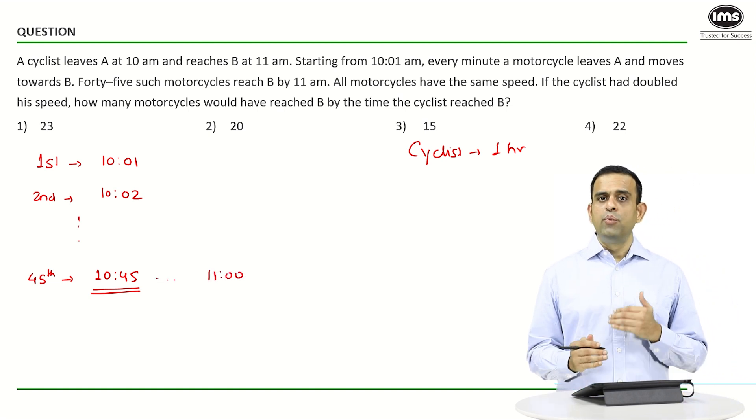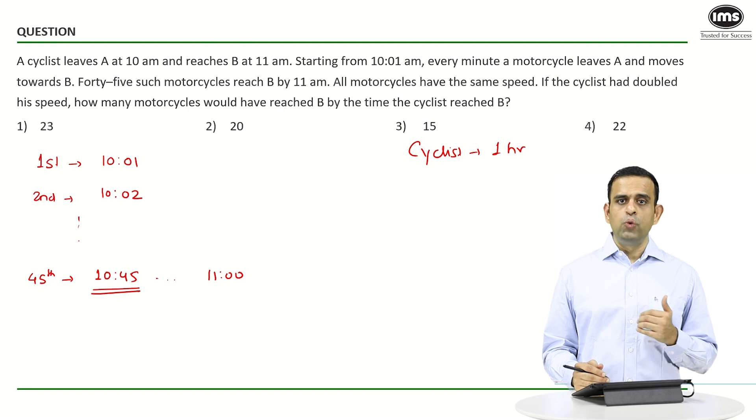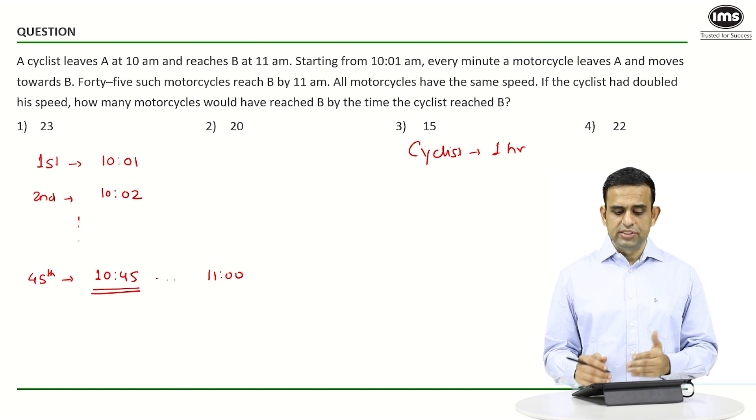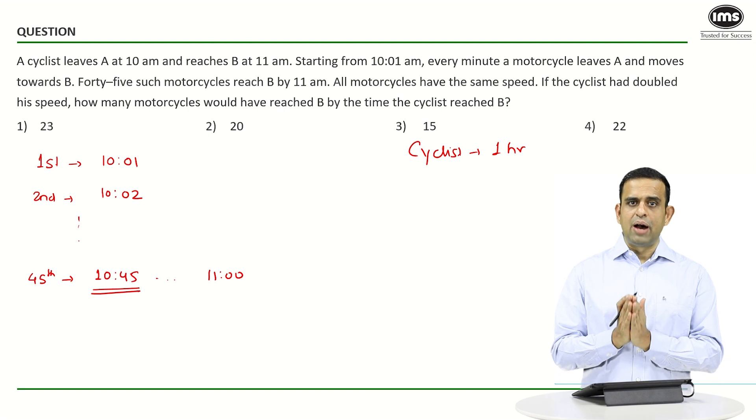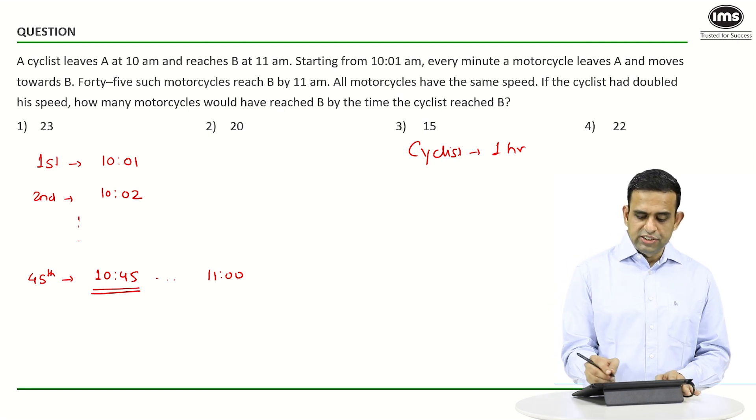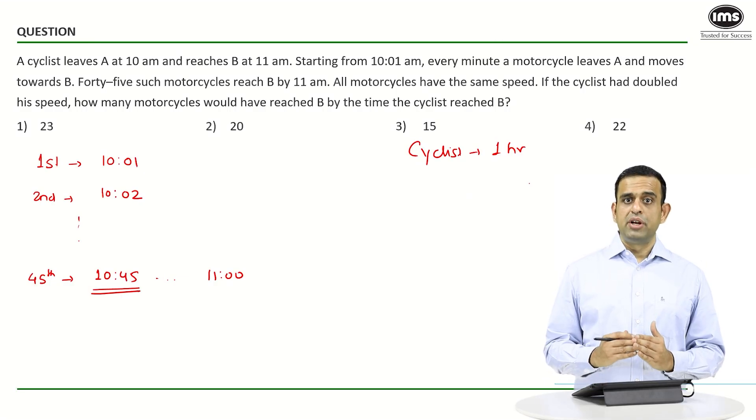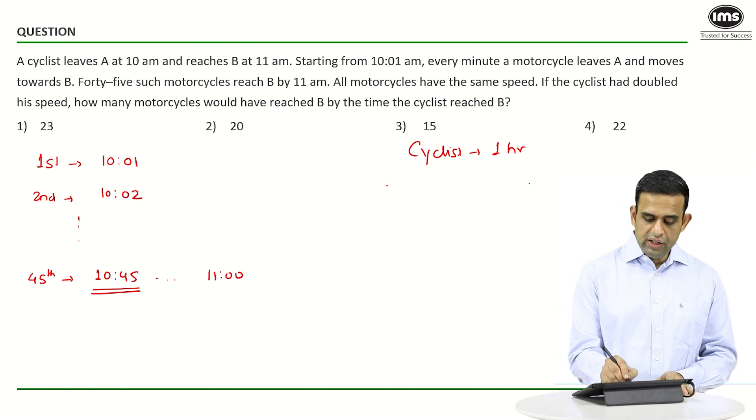Can we answer what time a motorcycle takes to go from A to B? We can say 15 minutes. So every motorcycle takes 15 minutes since the speed of all motorcycles happens to be the same. The cyclist takes one hour, so every motorcycle takes 15 minutes to go from point A to B.